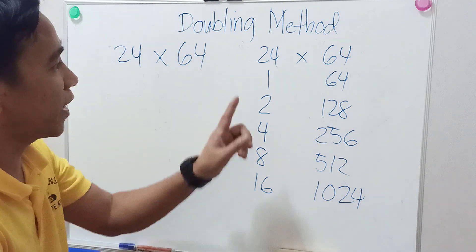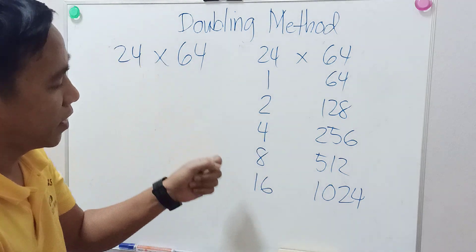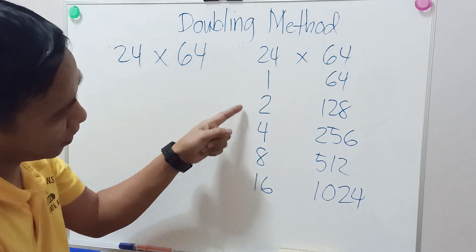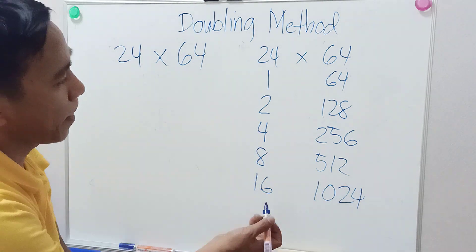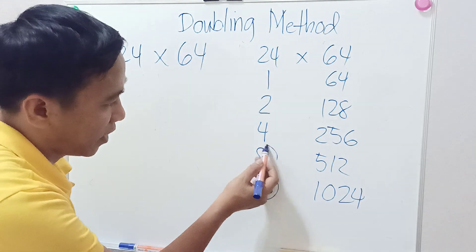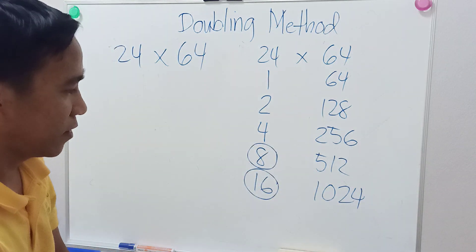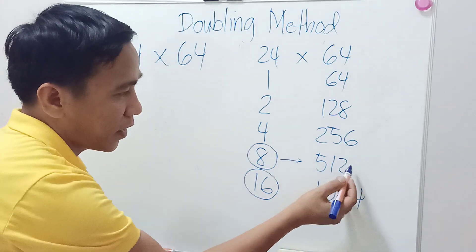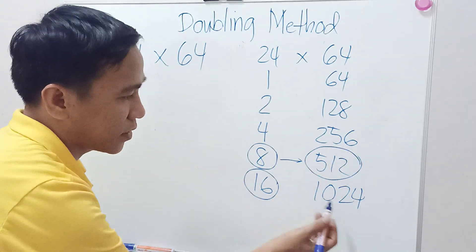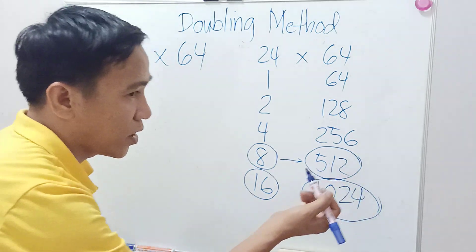Find the numbers that add up to 24 in the left hand side. That is 16 and 8. The corresponding number of 8 is 512, and 16 is 1024.